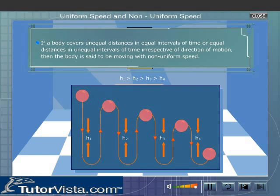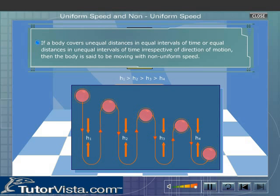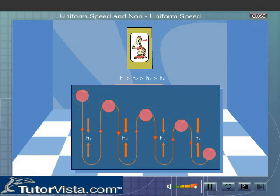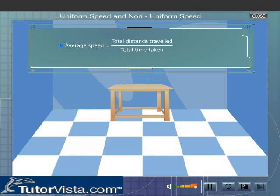Thus, if a body covers unequal distances in equal intervals of time, or equal distances in unequal intervals of time, irrespective of direction of motion, then the body is said to be moving with non-uniform speed. When a body travels with non-uniform speed, then the average speed of the body is given by the formula: average speed is equal to total distance travelled divided by total time taken.